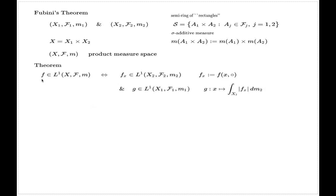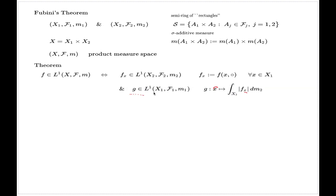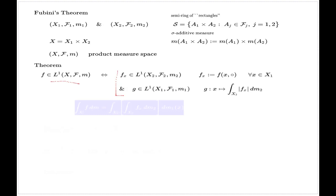The function is integrable over the product measure space if and only if the function obtained by fixing one of the variables is integrable over the second measure space, and that holds for every x which you fix. Moreover, if you construct the function of integrals over the second measure space, that function depends on x, and it is integrable with respect to the first measure space. Plus, given that either the function is integrable on the product measure space or this condition is met, you can always identify the integrals accordingly.